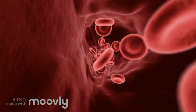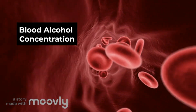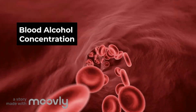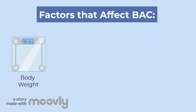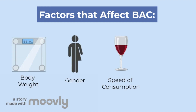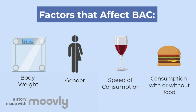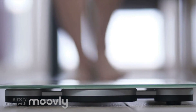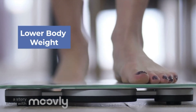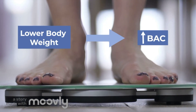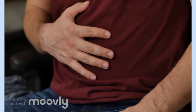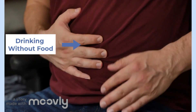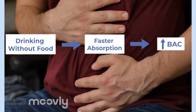The amount of alcohol absorbed contributes to an individual's blood alcohol concentration, also known as BAC. There are many other factors that affect blood alcohol concentration, including body weight, gender, speed of alcohol consumption, and whether alcohol is consumed with or without food. Females and individuals with lower body weight typically develop higher blood alcohol concentrations more quickly because they have less body water. Additionally, drinking on an empty stomach leads to faster absorption and therefore higher blood alcohol concentration.